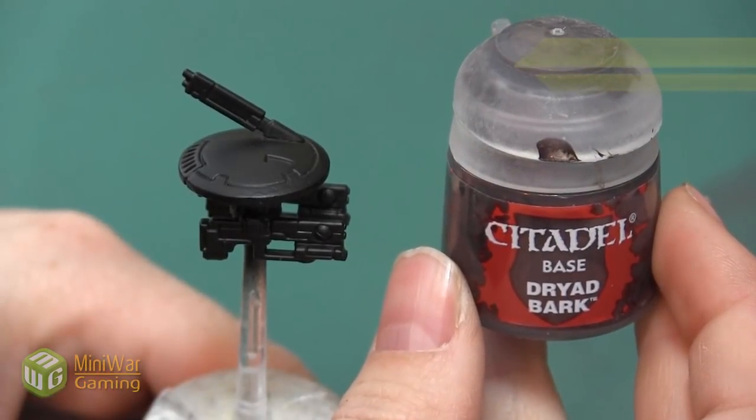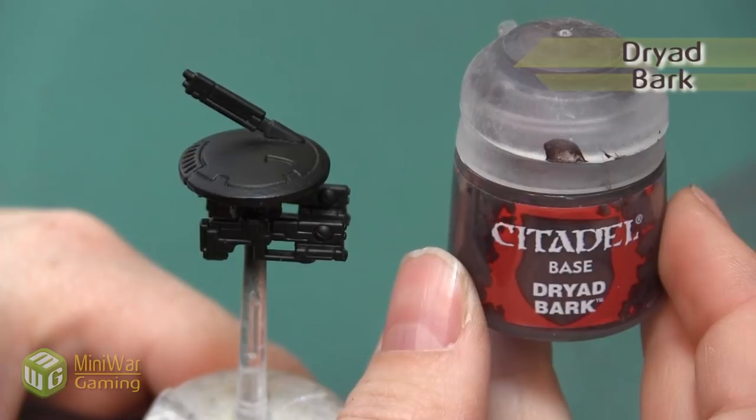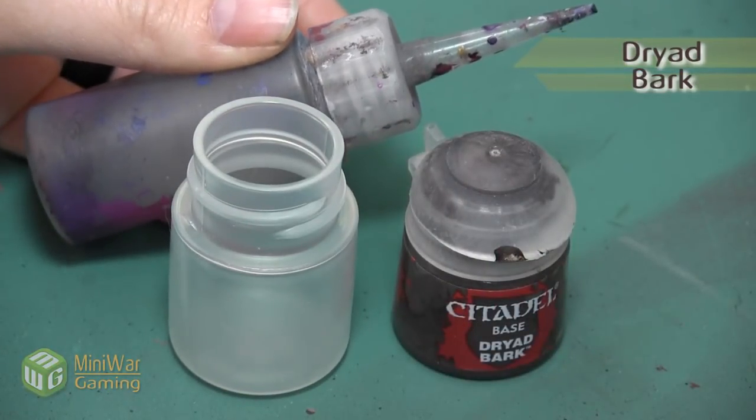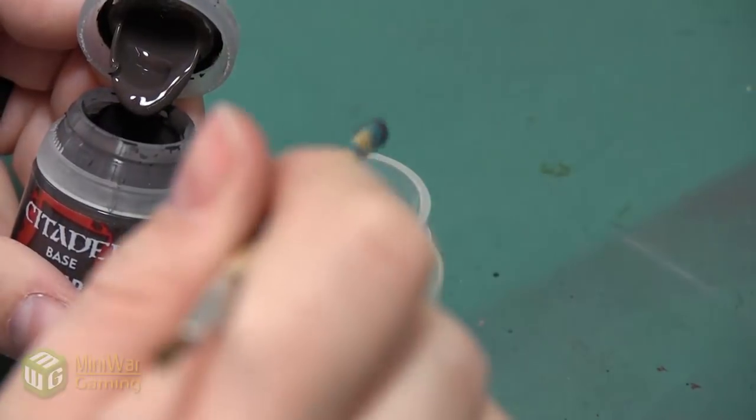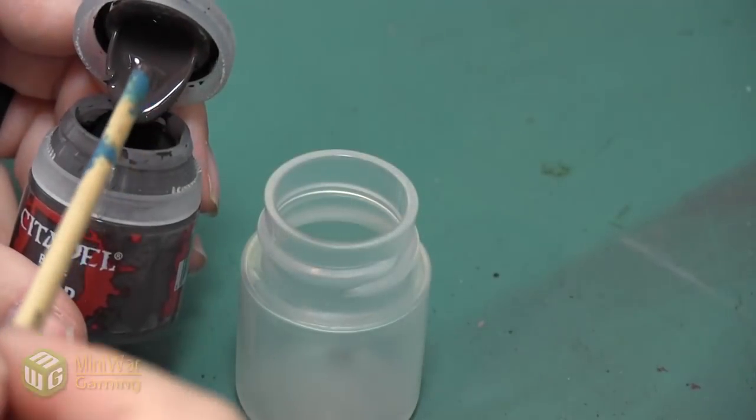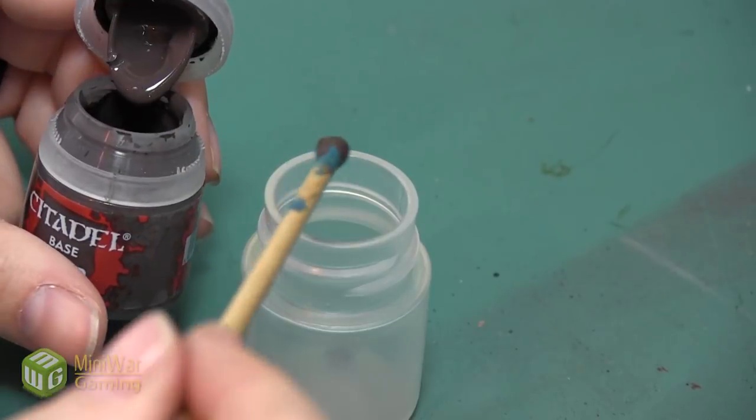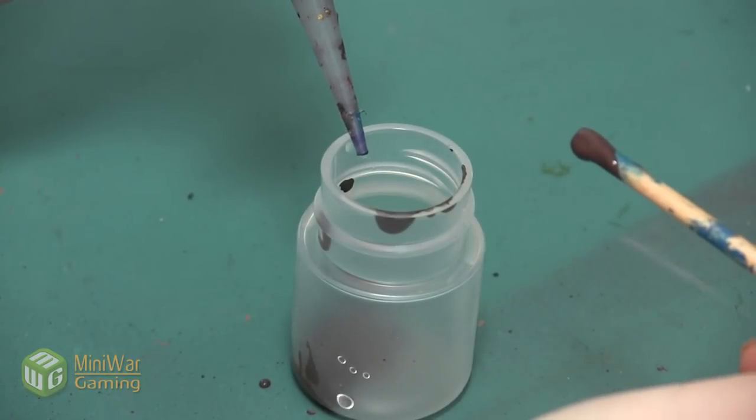Our first coat is going to be with the color Dryad Bark. All of these paints have a Citadel Air color that you can use. I'm going to mix my own paint just because I generally like to have a little bit more control over the consistency and I make it a little bit thinner.